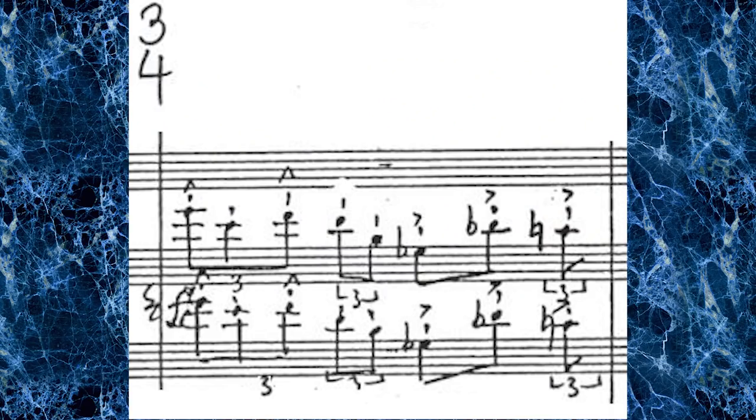Adès seems to be using these time signatures more and more — Totentanz has them on almost every page. He also uses irrational rhythms in the sense of parts of a triplet or parts of a quintuplet. Here's one example from a 3-4 bar in his orchestral piece Tevot — it's like he's taken a triplet, ripped it apart and stuck a couple of eighth notes in the middle.